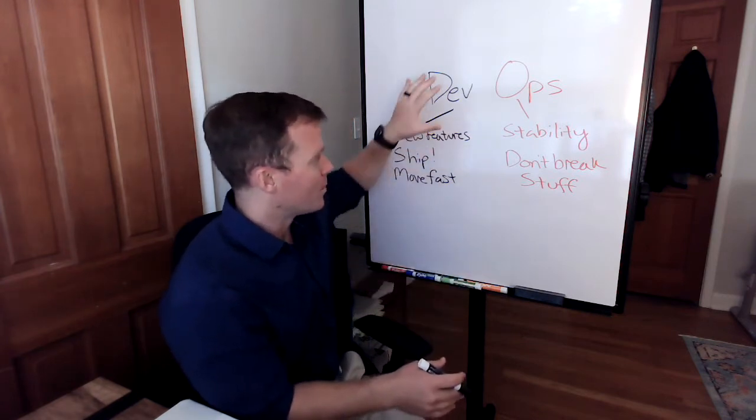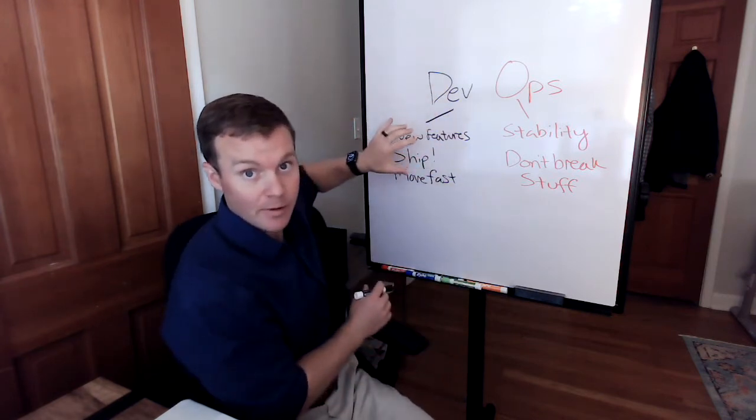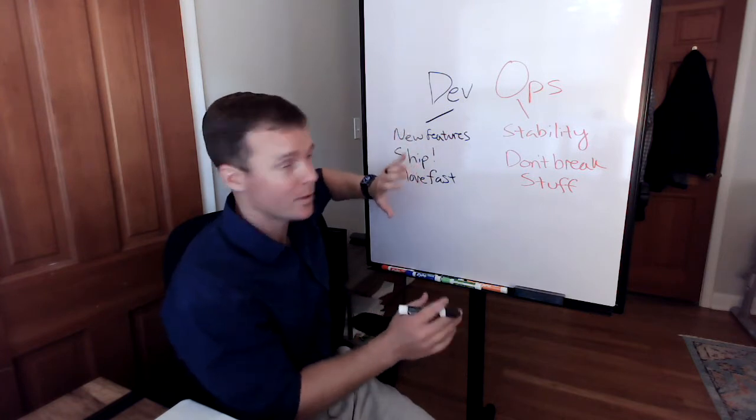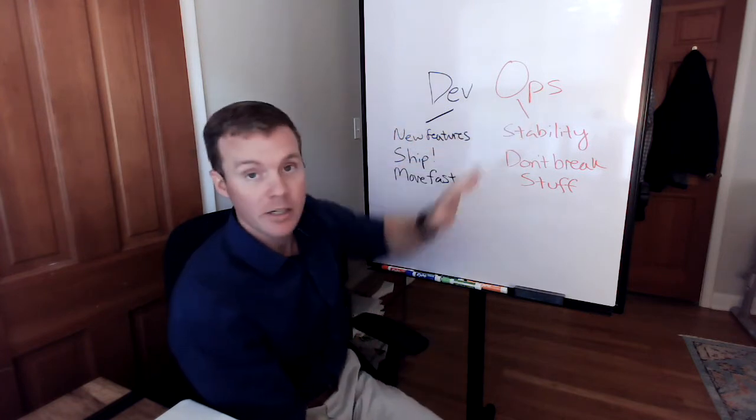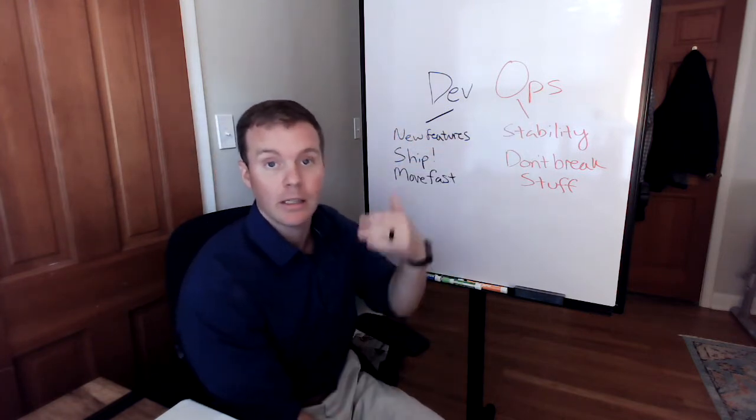So we build version one, development, we're incentivizing these developers, ship stuff, burn down story points, whatever you want. And then we have an operations team, keep the application up and running, keep the users happy.